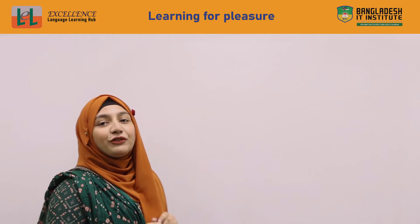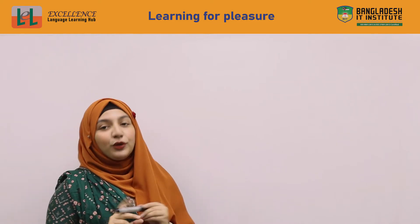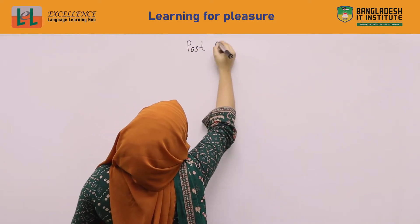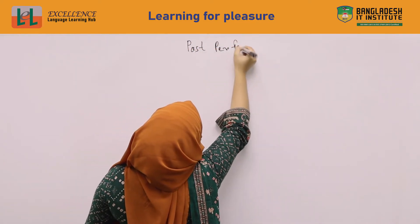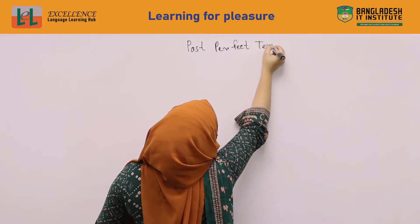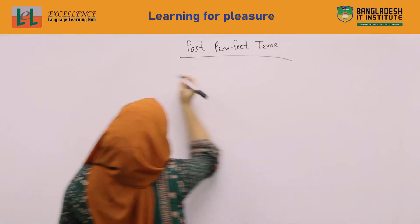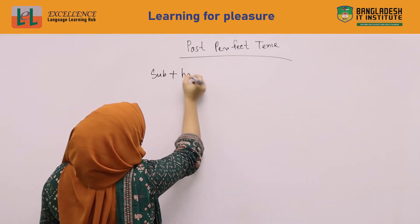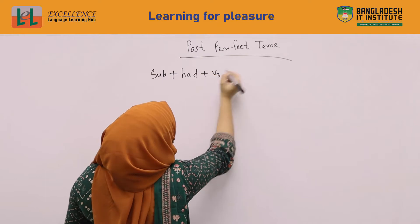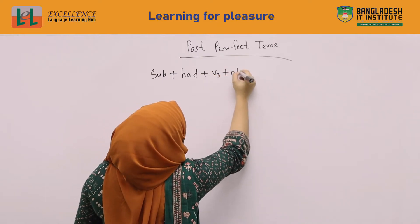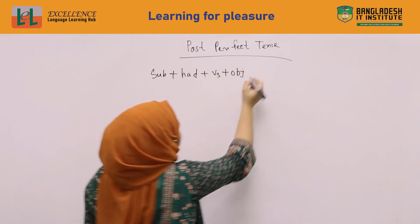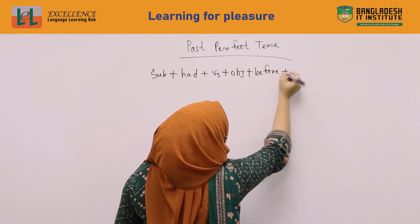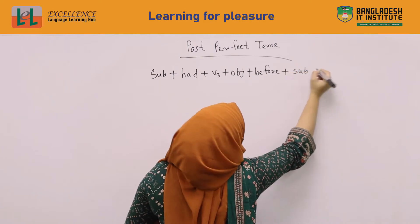Past Perfect Tense — we will follow two structures. How many structures do we have? The first structure is: Subject plus had plus verb third form plus object plus before, then again Subject plus verb second form plus object.